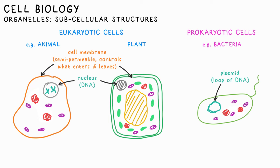The cell membrane keeps everything inside the cell, but they're also semi-permeable, which means they allow certain substances to pass through. Plant cells and most bacteria have an extra cell wall made of cellulose, providing a rigid structure for them.